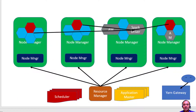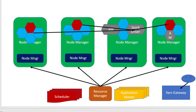Let us understand how Spark applications work on top of YARN, yet another resource negotiator. Hadoop provides a resource manager called YARN, which works in a master-worker architecture. The master is called a resource manager and the worker is called a node manager. In each worker machine, the node manager process will continue to run and report to the resource manager.